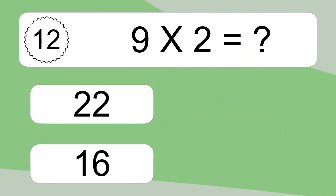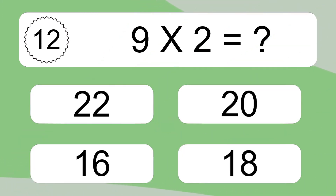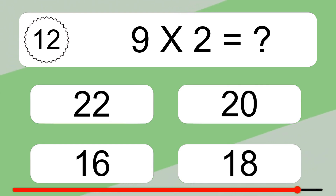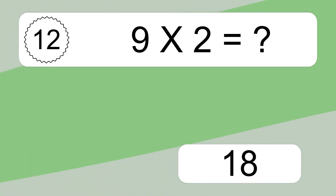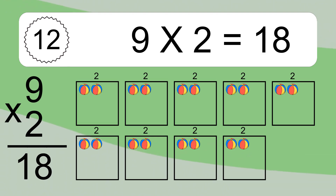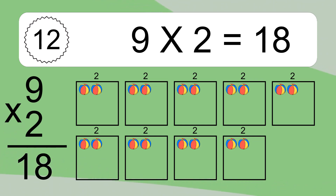9 times 2 equals what? 9 times 2 equals 18. We have 9 boxes, and each box has 2 colorful balls inside. If you count all the balls in all the boxes together, you will have 9 times 2 balls. This equals 18 balls.